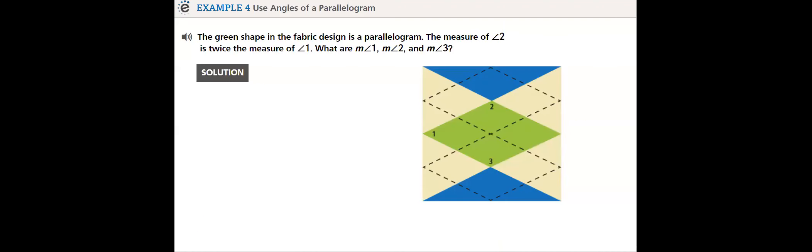So, this is an example. The green shape in the fabric design is a parallelogram. Now, the measure of angle two is twice the measure of angle one. What is the measurement of angle one, two, and three? So, here, you will start by assuming that the measurement of angle one, let's say, is x. And then you proceed from that.